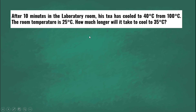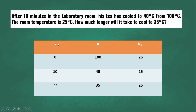To better understand the problem, let's make a table. Here, t refers to time, u refers to the temperature of the medium which is the tea, and u sub a refers to the temperature of the surrounding or the room temperature. Based on the problem, at time zero the temperature of the tea is 100 degrees Celsius with a room temperature of 25 degrees Celsius. After 10 minutes, the temperature of the tea becomes 40 degrees Celsius, with the room still at 25 degrees Celsius. What is being asked is how much longer — so time is what we need to find.